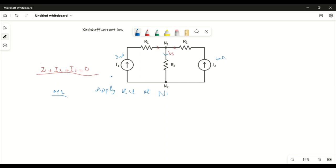Method one: incoming is equal to outgoing. Incoming means I can see that I1 is incoming and I2 is incoming.